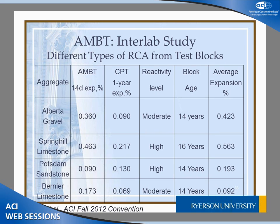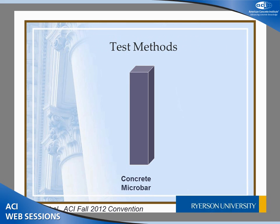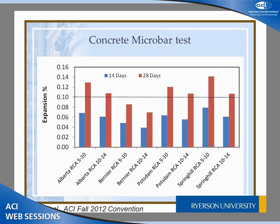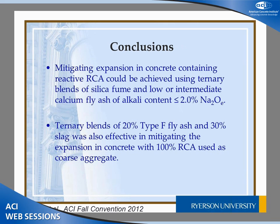An inter-lab study for the accelerated mortar bar showed very encouraging results — within-test variation across four labs was very similar to natural stone. The next step was the concrete microbar test. Using an expansion limit of 1.1% after 28 days, the test was able to identify expansive materials. Preliminary results on different sources confirmed that this test could be a promising tool in the future — it is short-term and minimizes crushing, potentially giving more reliable results for RCA evaluation.